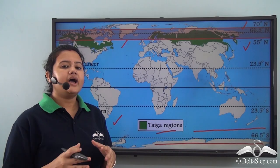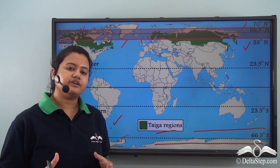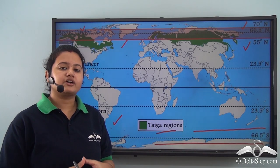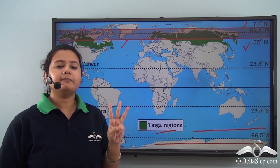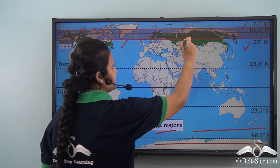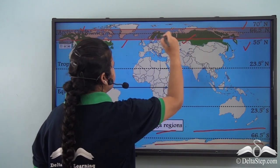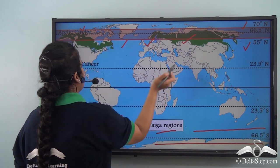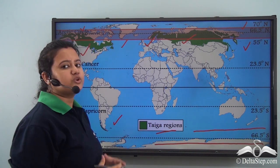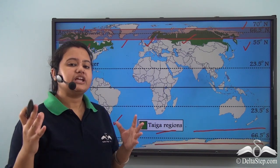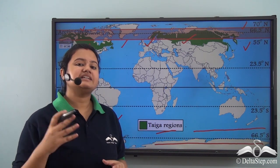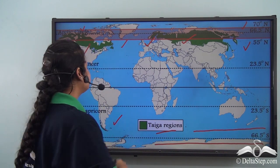The Taiga region spreads across three major continents: Asia, Europe, and North America. We shall explore each of these continents individually in detail.